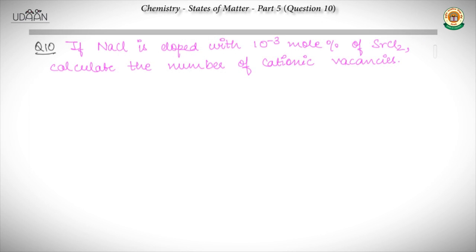Question number 11 is based on the concept of defects in crystal lattices. It states that if NaCl is doped with 10 to the power minus 3 mole percentage of SrCl₂, we need to calculate the number of cationic vacancies. This is a very important problem — look carefully at the solution.